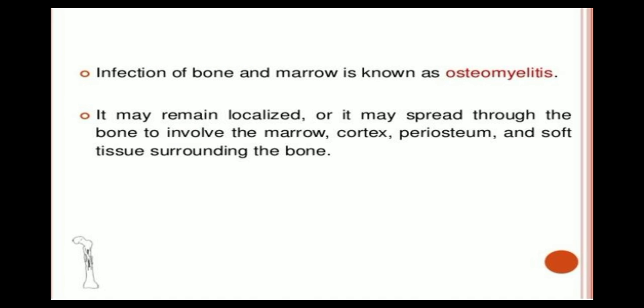The definition: infection of bone and marrow is known as Osteomyelitis. It may remain localized or spread through the bone to involve the marrow, cortex, periosteum, and soft tissue surrounding the bone. If treatment is taken at the right time, Osteomyelitis remains localized; but if ignored, it may spread to adjacent areas including the marrow, cortex, periosteum, and surrounding soft tissue, also causing inflammation of the bone.